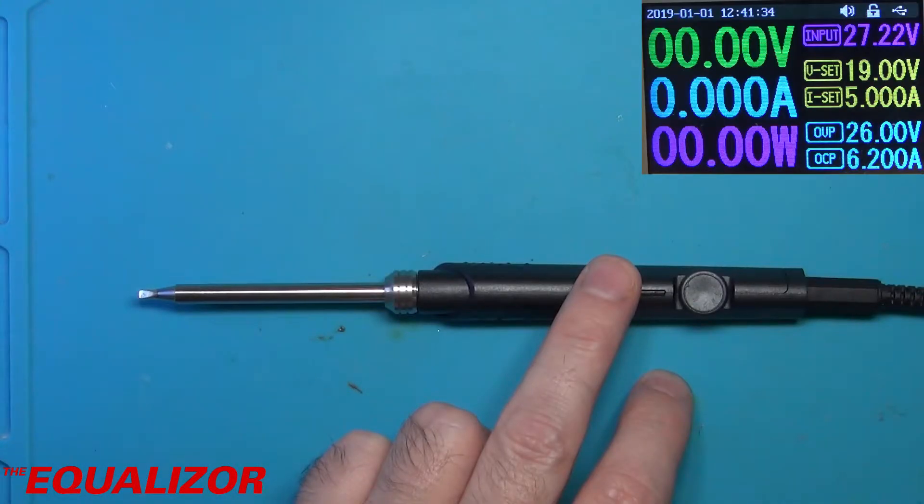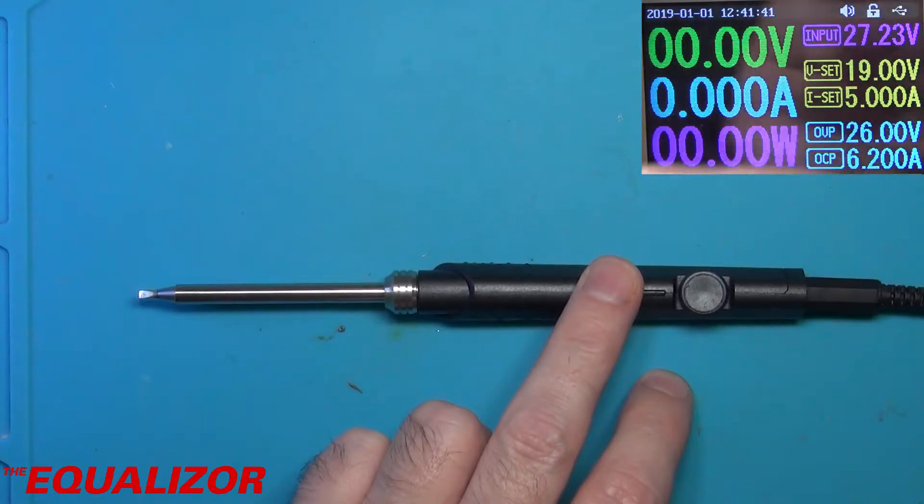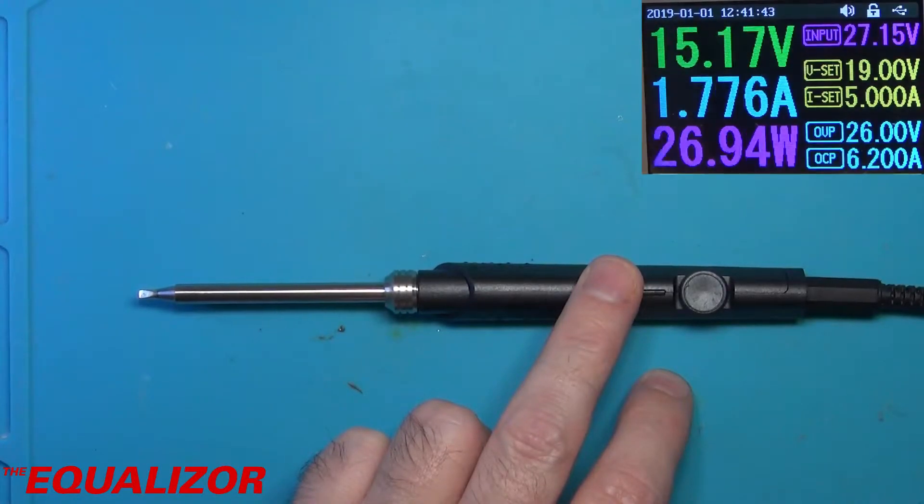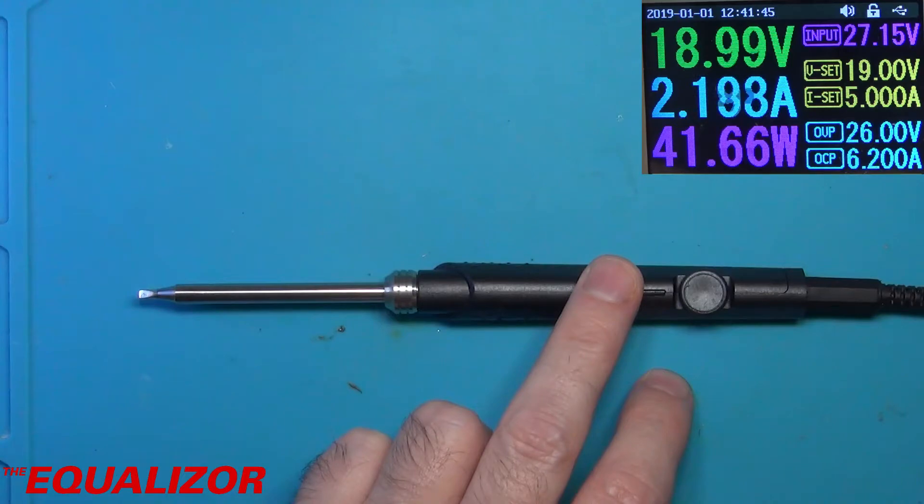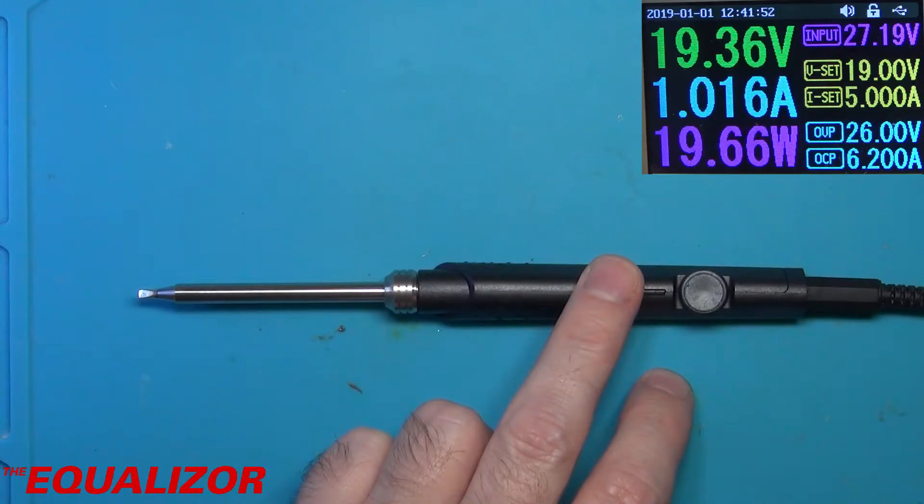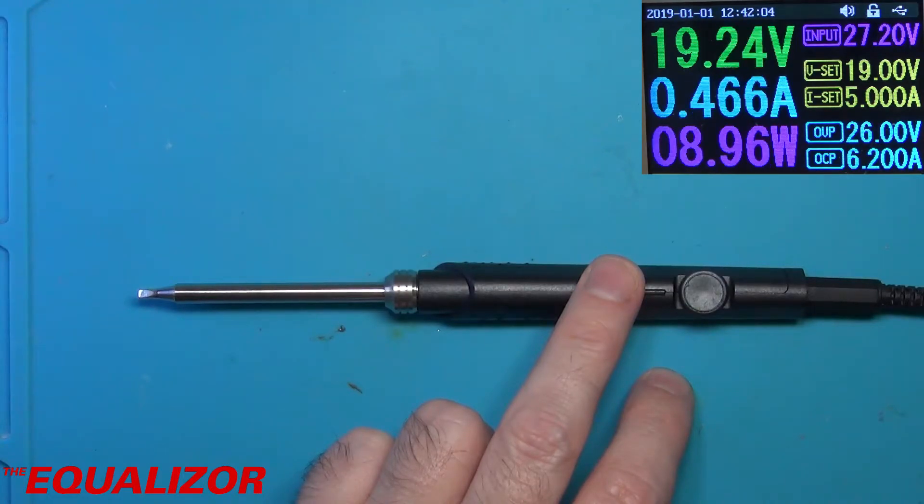Right, after sorting out a slight technical problem with the lead I was using being short circuit, let's go ahead and fire this up. That looks pretty good. Two amps and dropping. I can see a bit of smoke coming off the tip just then.